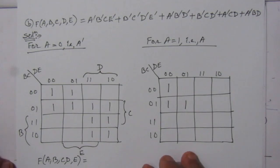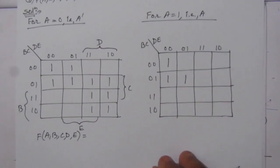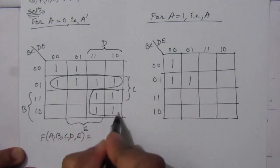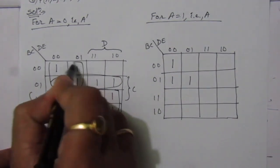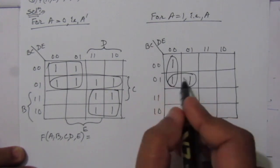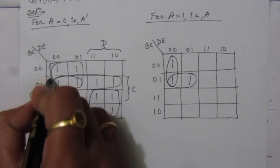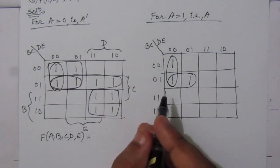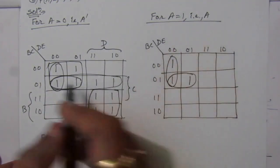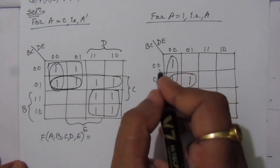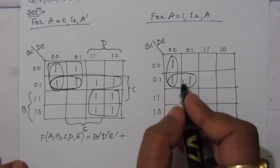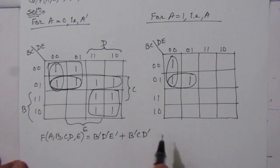Now we will find out the expression by combining these values to make pairs and writing out the simplified expression. From this table we can combine like this, then like this, then like this. From the second table we can combine like this and this one. We can see that this combination is also present in the other table, and this one is also present, so whenever we write the terms for those two groups we will neglect A and A-bar. This term is present for both A equal to 1 and A equal to 0 tables, so for that term we have B-bar D-bar E-bar, and for the next term we have B-bar C D-bar.